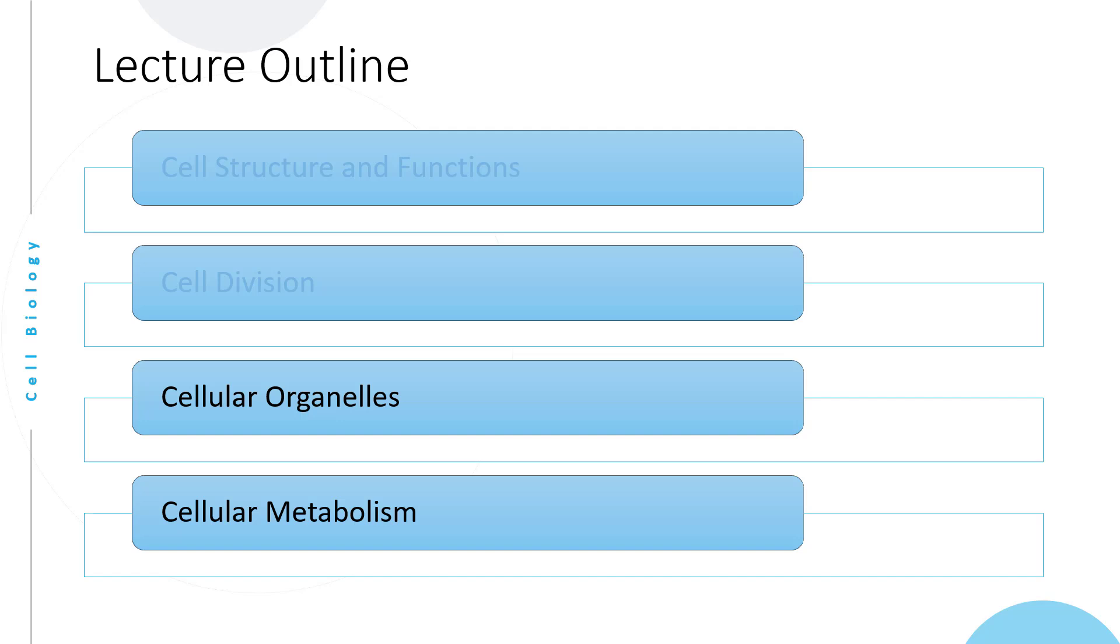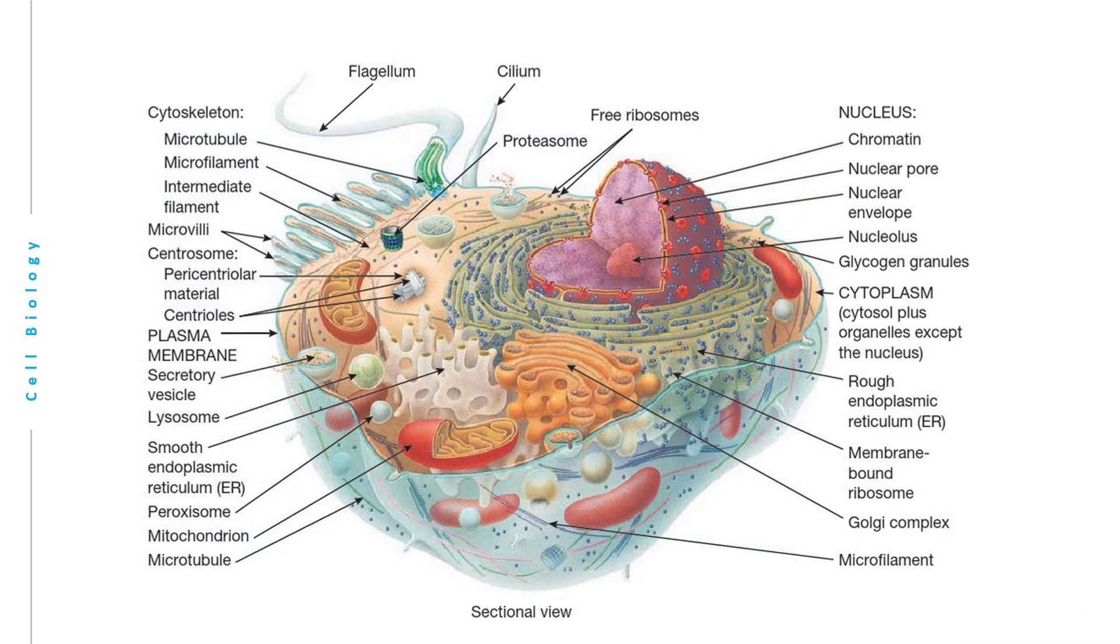Now we will look at cellular organelles and a little bit about cellular metabolism. Looking back at the typical cell, and we already spoke about the cell membrane and the nucleus, let's now focus our attention to the many organelles or little organs found within the cytoplasm.